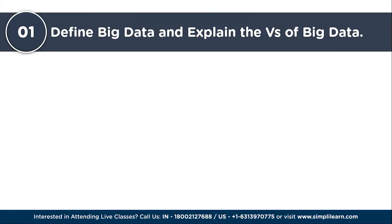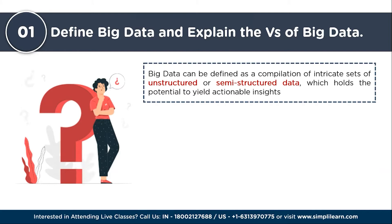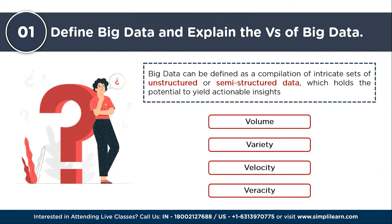Our first question is: define big data and explain the Vs of big data. Big data can be described as a compilation of intricate unstructured or semi-structured datasets that possess the potential to yield actionable insights. The four fundamental dimensions, often referred to as the Vs of big data, are as follows. The first is Volume — this pertains to the sheer magnitude of data generated and collected, signifying the immense quantity of data that conventional processing techniques might struggle to handle.